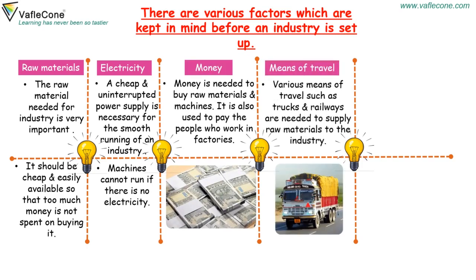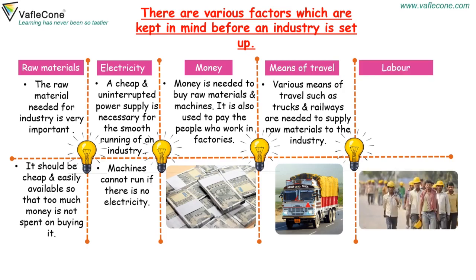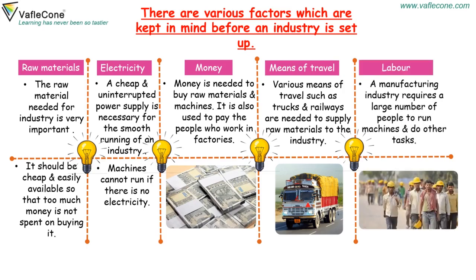Means of Travel: Various means of travel such as trucks and railways are needed to supply raw materials to the industry. Labor: A manufacturing industry requires a large number of people to run machines and do other tasks.